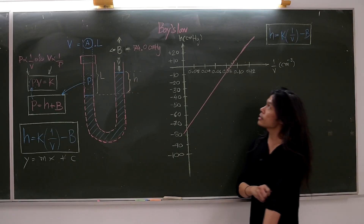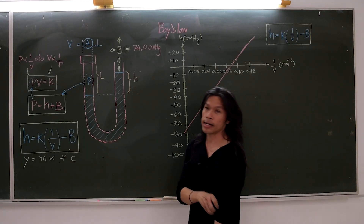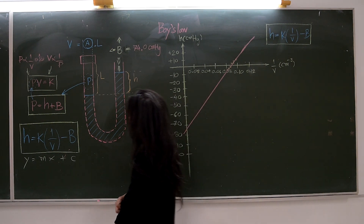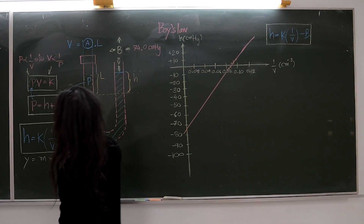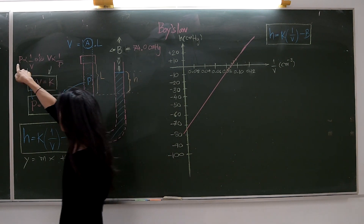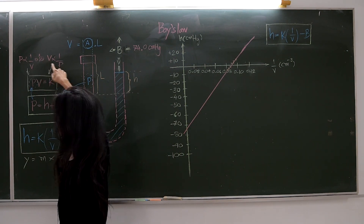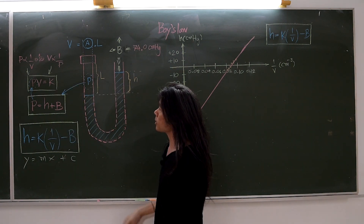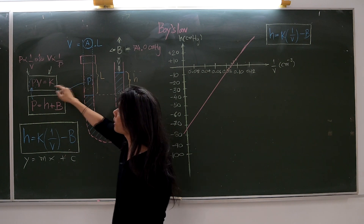This experiment is about Boyle's law. The fundamental of Boyle's law is that if the number of particles and temperature of gas is constant, then the pressure is inversely proportional to the volume, or the volume is inversely proportional to the pressure. This principle follows Boyle's law and provides the equation P times V equals K.